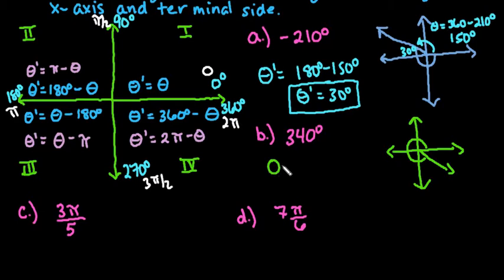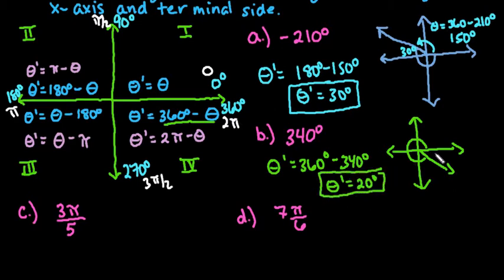So to find theta prime, we would just take 360 degrees, I'm just using this rule right here, minus 340 degrees. And so we end up with theta prime is equal to 20 degrees. So 20 degrees would be the angle measure formed between the x-axis and the terminal side.